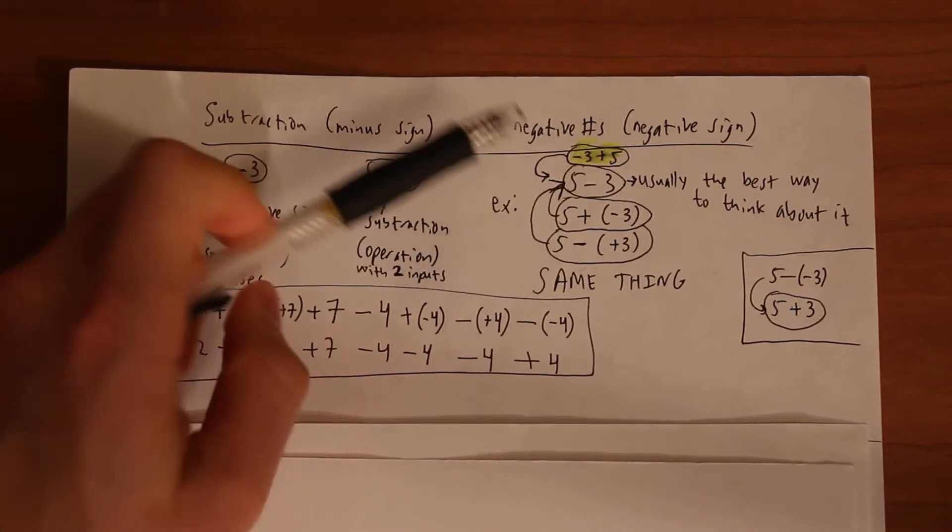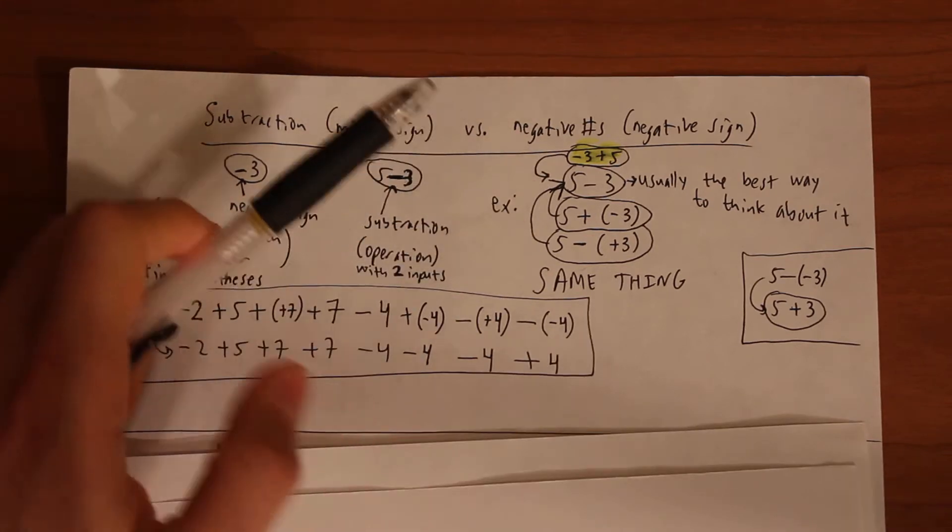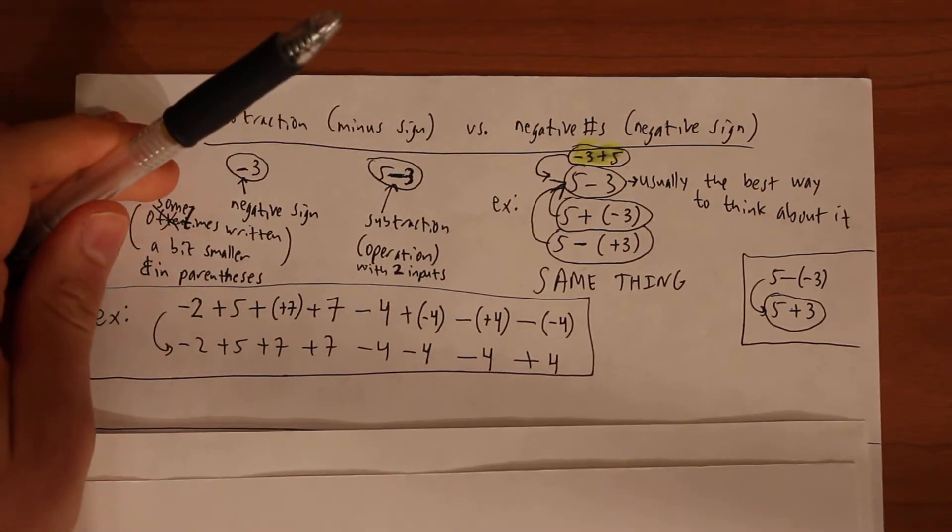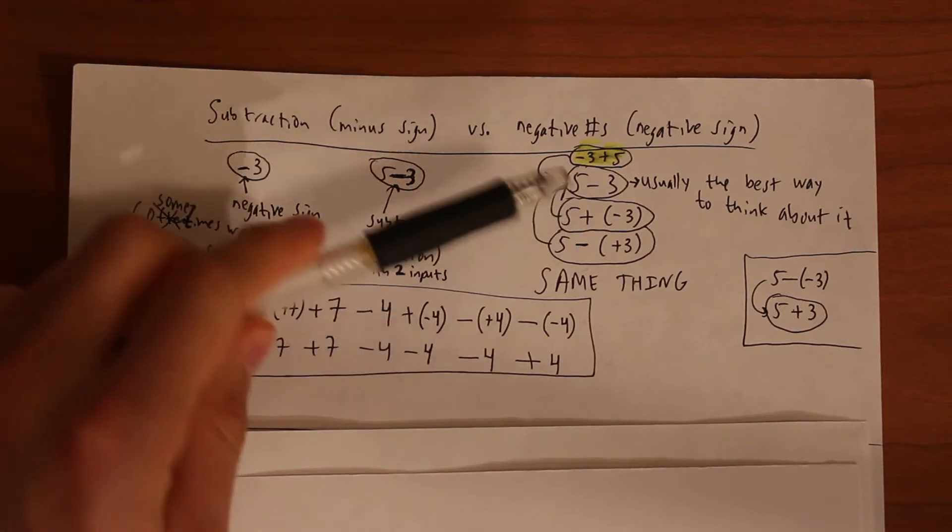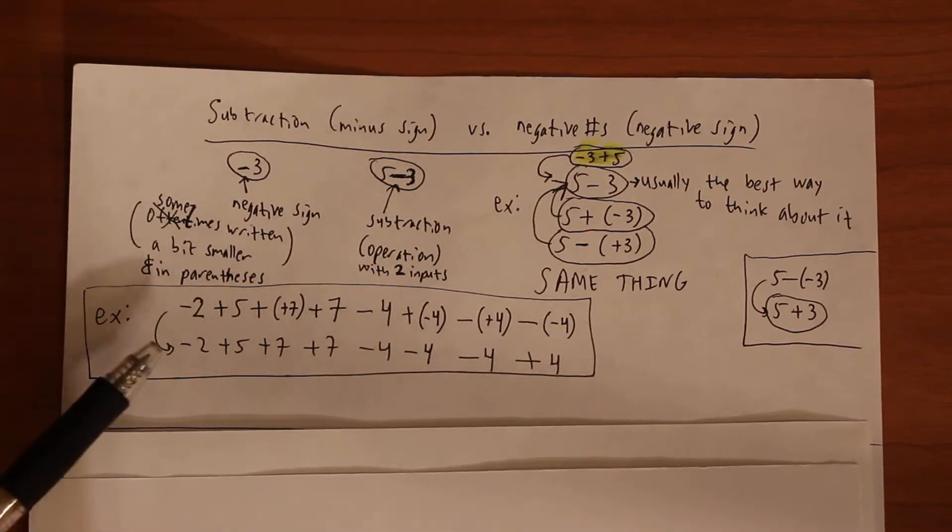So that negative three is turned into a subtraction over here, so the effect is the same. But they're technically different things, so you don't want to confuse them. But when you're actually number crunching there's not much of a distinction.